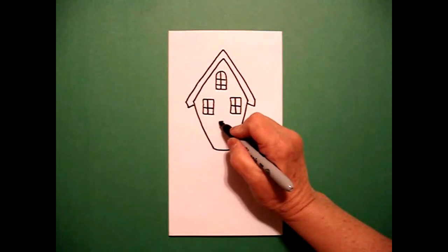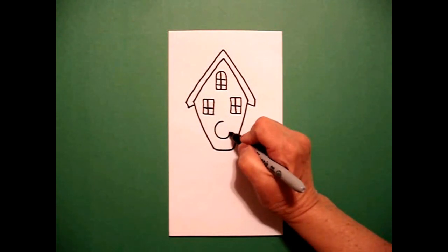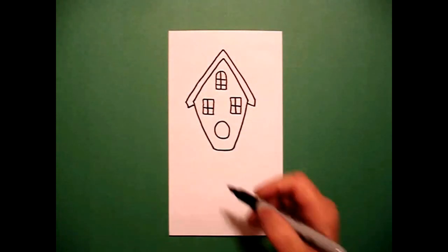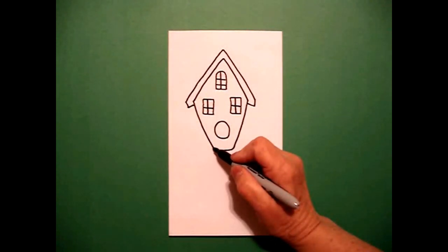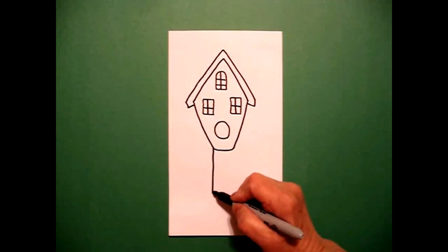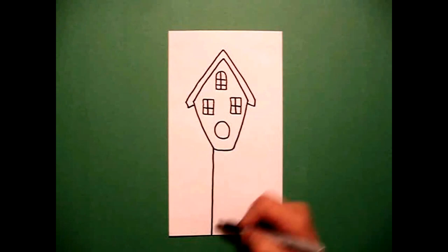Right in the center, I'm going to draw a circle. I come back over here on the left and I'm going to draw a straight line down, down, down, all the way to the bottom of my paper.